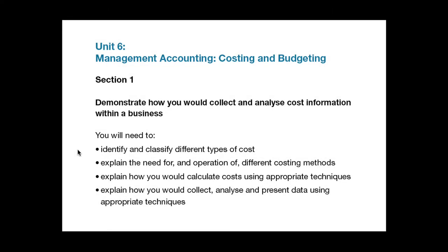Section 1: here you need to describe the different cost types such as fixed, variable and semi-variable, and explain why certain costs are allocated to each cost type. For example, rent would be classified as a fixed cost.